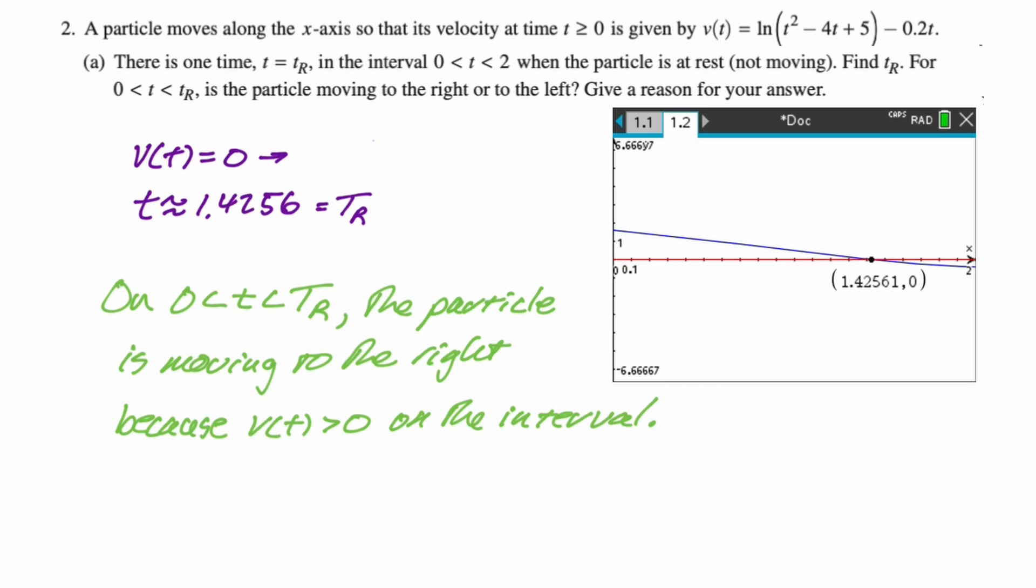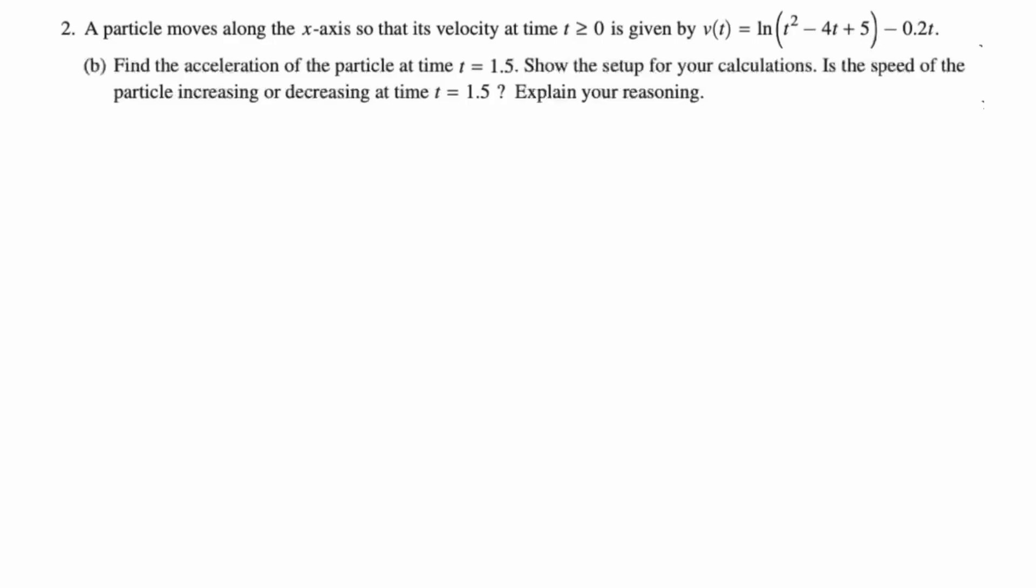All right, let's take a look at part B. B says, find the acceleration of the particle at the time t equals 1.5. Show the setup for your calculations. Is the speed of the particle increasing or decreasing at t equals 1.5? Explain your reasoning. All right. So we need to find acceleration. A of 1.5. Now, what I think we mean here by show the setup for our calculations, A of t is v prime of t. So A of 1.5 will be v prime of 1.5. They want to know where you're getting this value that you're about to write down.